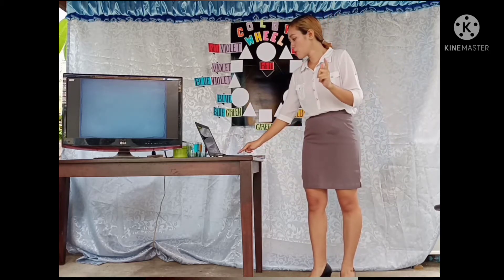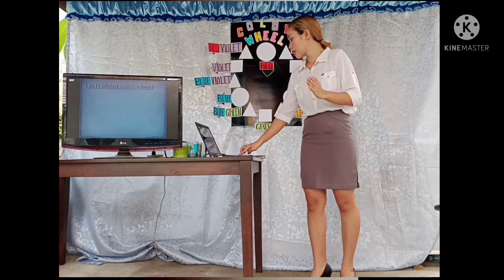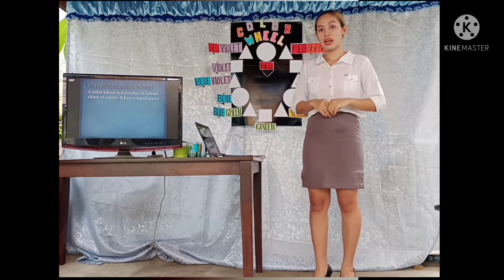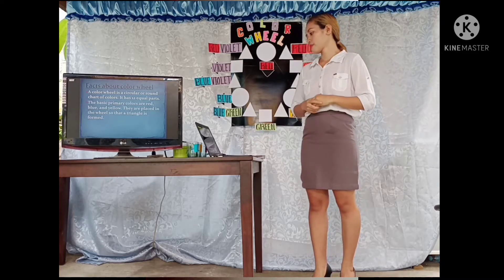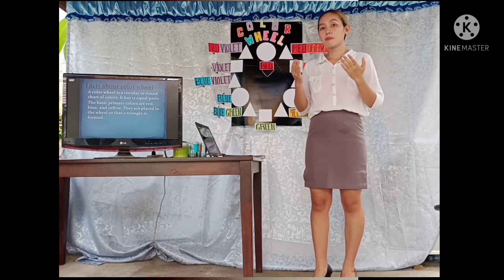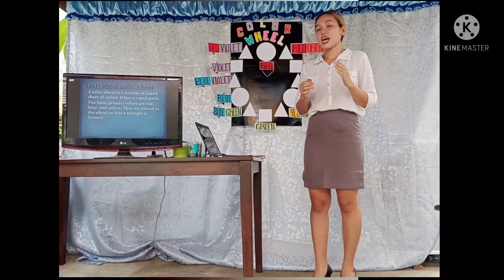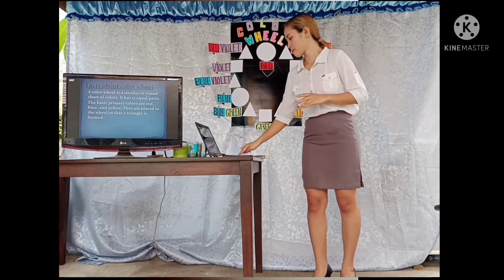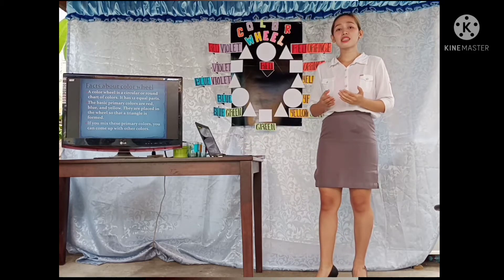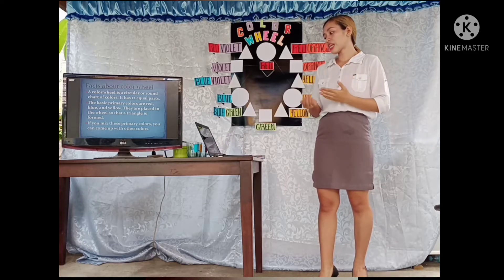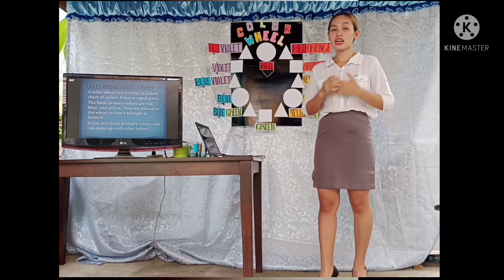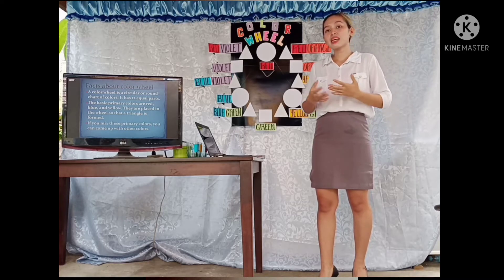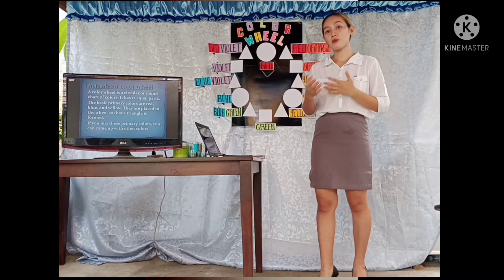Did you know that a color wheel is a circular or round chart of colors that has 12 equal parts? The basic primary colors are red, blue, and yellow. They are placed in the wheel such that a triangle is formed. If you mix these primary colors, you can come up with other different colors.